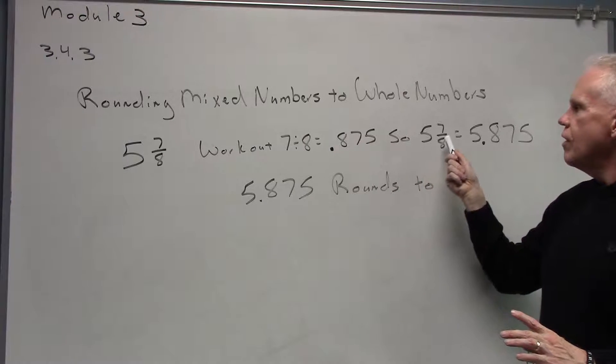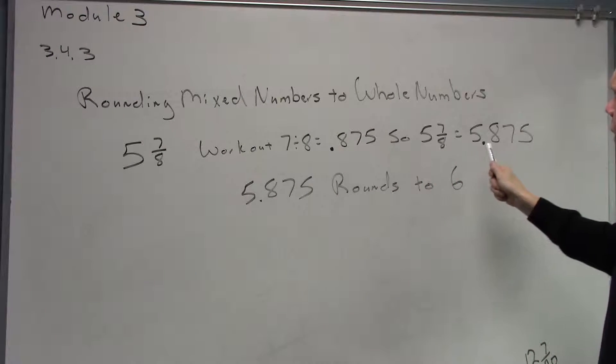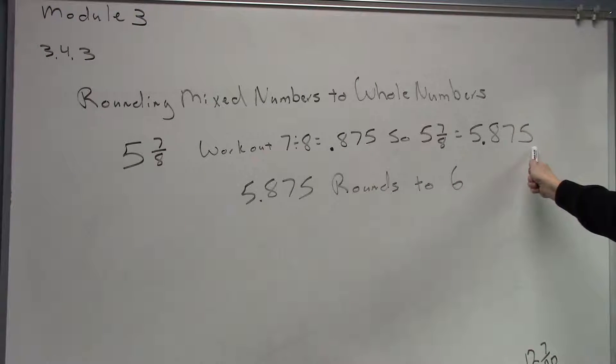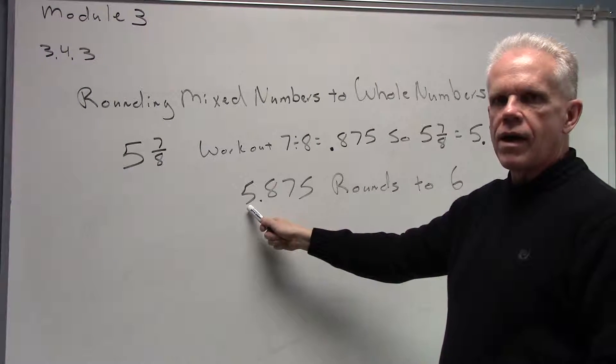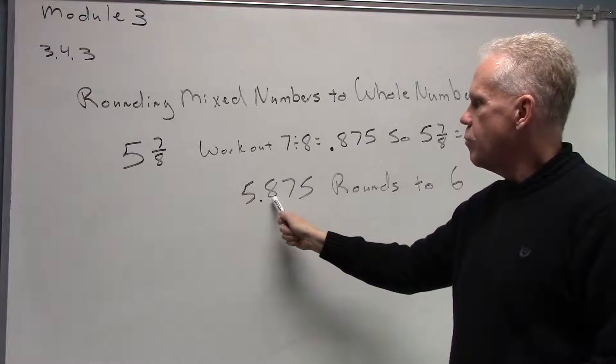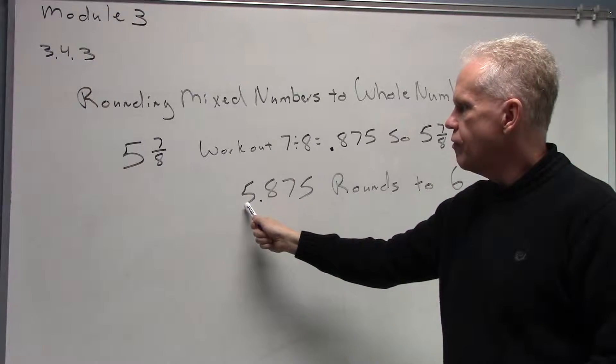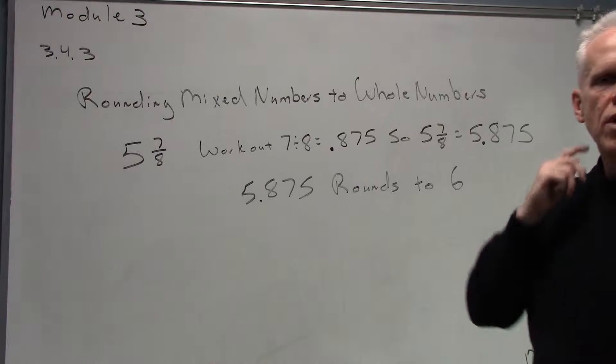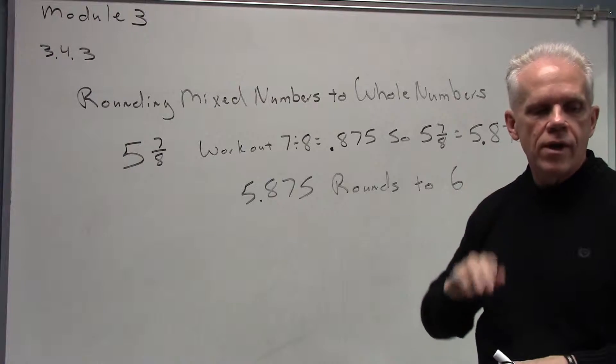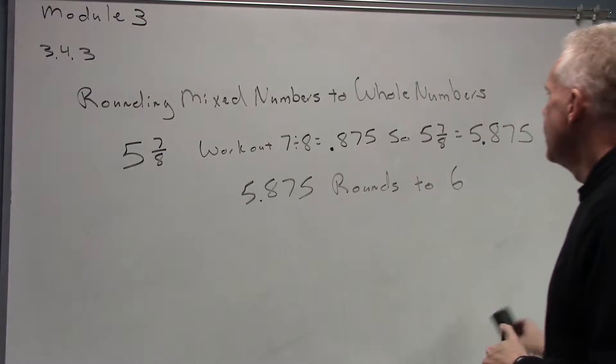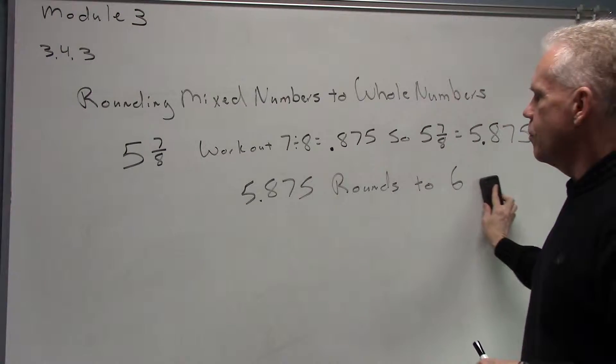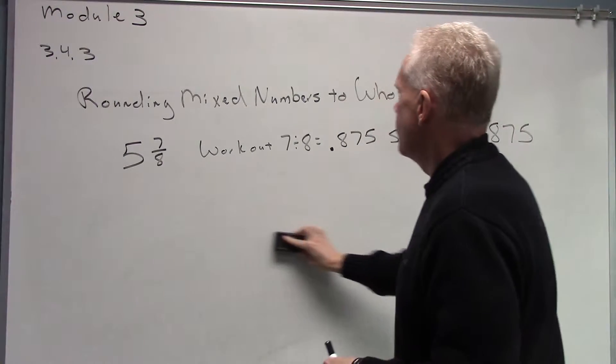Alright, so then 5 and 7 eighths can be written as a decimal then as 5.875. Now, we can round off 5.875 to a whole number pretty easily. 5.8, the 8 rounds the 5 up to a 6. And so, we've just rounded off a mixed number by making it to a decimal and going.